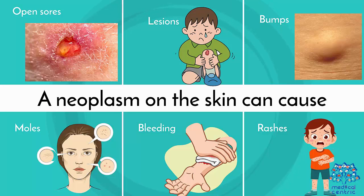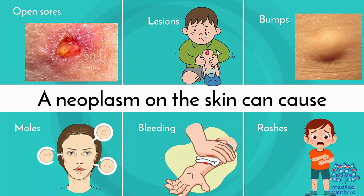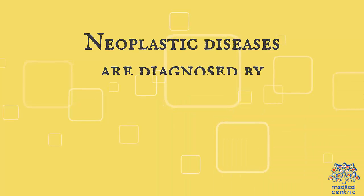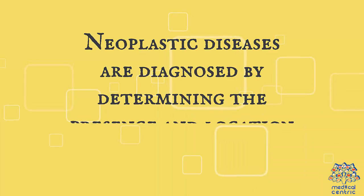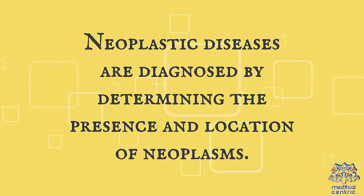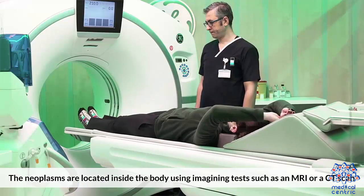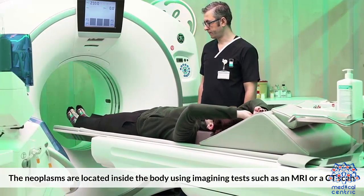A neoplasm on the skin can cause: 1. Open sores, 2. Lesions, 3. Bumps, 4. Moles, 5. Bleeding, 6. Rashes.